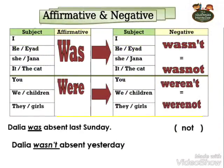طيب كمان تعرف أكتر عن القاعدة. احنا عرفنا إن الـ past بتاعة verb to be هي was و were. يعني was بيجي معها I, he, she, it. Were بيجي معها you, we, they. ناخد بالنا جداً من الـ subjects. For example: I was absent yesterday — أنا كنت غايب مبارح. He was absent, she was absent, you were absent, and so on.